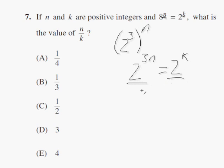Now that the bases are the same on each side, we just go ahead and set each of the exponents equal to each other. So we know that k equals 3n.